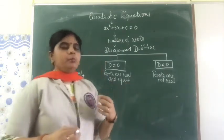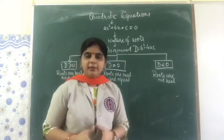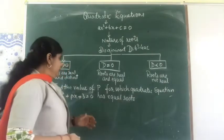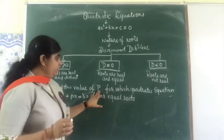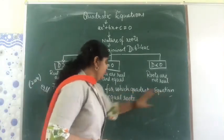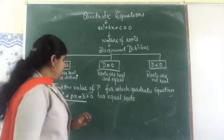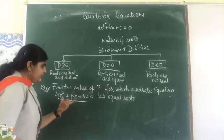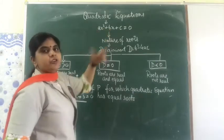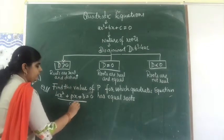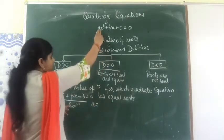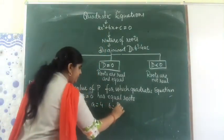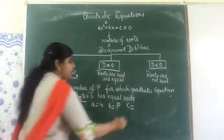Let us solve 2 to 3 problems based on this concept to clarify it further. I have selected one previous year question from 2014: find the value of p for which the quadratic equation 4x² + px + 3 = 0 has equal roots. We have to compare this equation with the general quadratic form. When I compare, I get the value of a = 4, the value of b = p, and the value of c = 3.